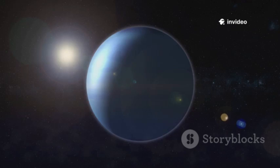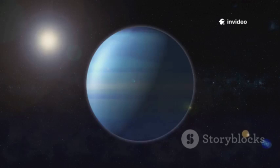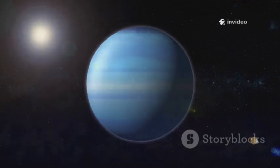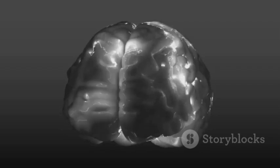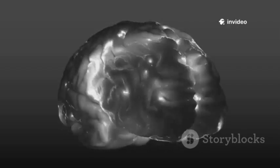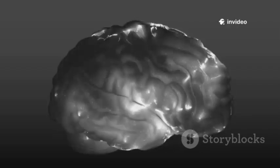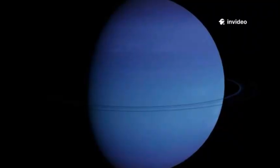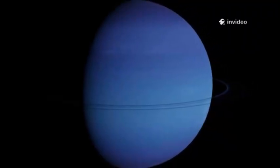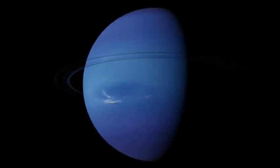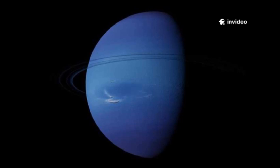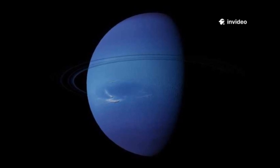Neptune holds the unique distinction of being the only planet discovered through pure mathematical calculation, before it was ever visually observed. It stands as a monumental triumph of human intellect, a testament to our ability to decipher the secrets of the cosmos using the power of reason and mathematics. Situated nearly 30 times farther from the Sun than our own Earth, Neptune resides in the frigid outer reaches of our solar system. Neptune effectively marks the edge of what we consider the classical solar system, beyond which lies the Kuiper Belt and the realm of icy dwarf planets.